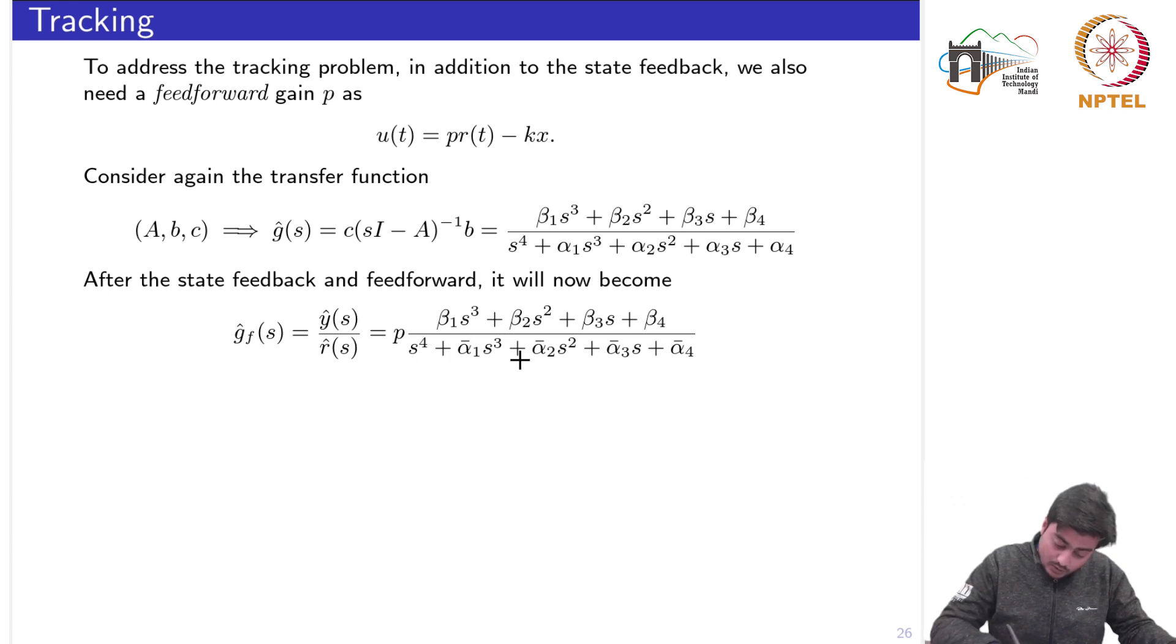That transfer function, the denominator would contain all the eigenvalues, all the desired eigenvalues denoted by or written in terms of a characteristic polynomial and their coefficients with this alpha i bars and the numerator won't change as we had seen earlier.